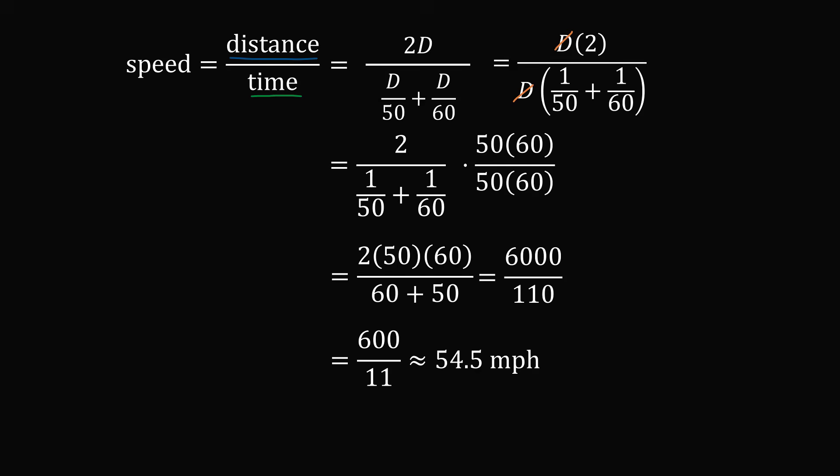That's the average speed for the entire trip. It is slightly less than 55 miles per hour because you're spending more time at the slower speed. It is a very common calculation to average speeds, so let's go ahead and generalize our calculation to a general formula.